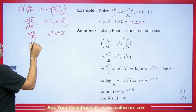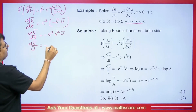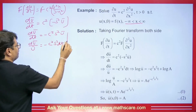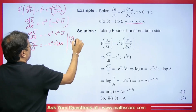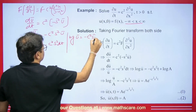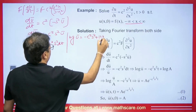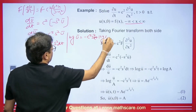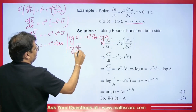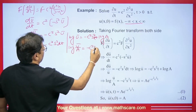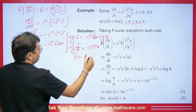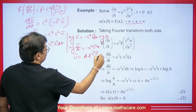Solving this ODE: dū/ū = −c²s² dt. Integrating both sides gives log ū = −c²s²t + log a. Rearranging: log(ū/a) = −c²s²t, so removing the log we get ū = a · e^(−c²s²t).